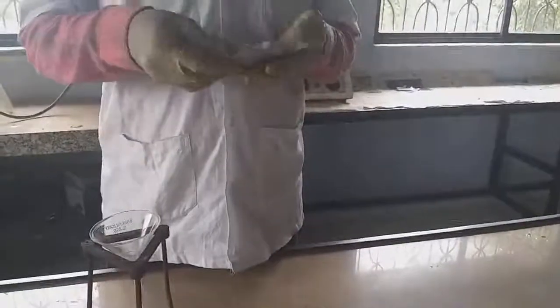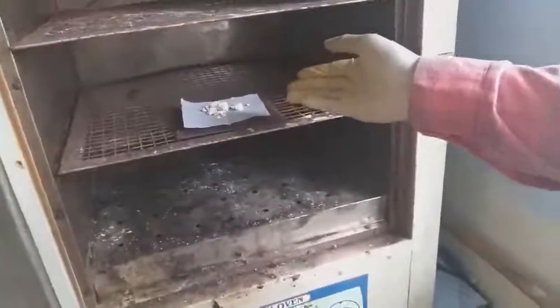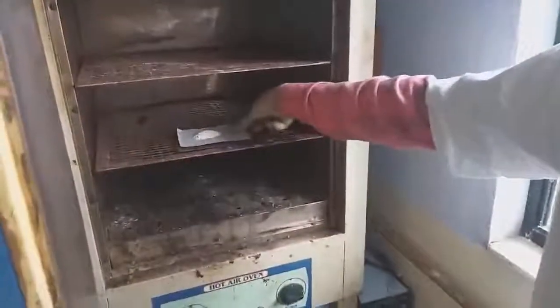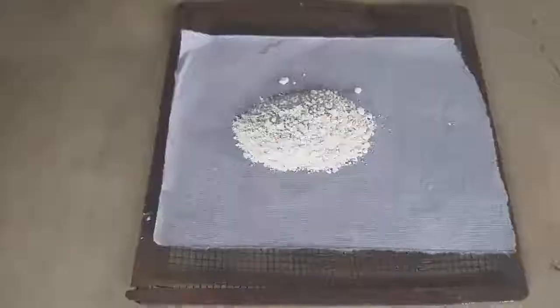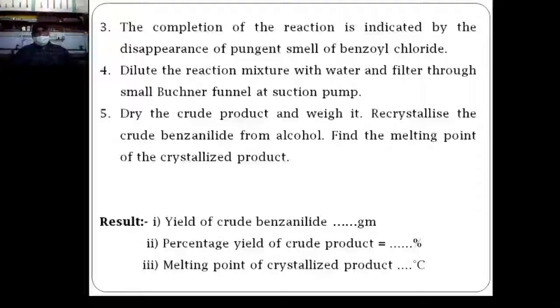Now take out the crude benzoanilide for the drying process to remove moisture from it. For drying, keep the crude in the hot air oven for 10 to 15 minutes. After drying, take it out from the hot air oven. Finally, the practical of synthesis of benzoanilide from aniline is complete.